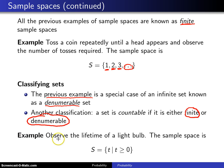Finally, one more example. Observe the lifetime of a light bulb. The sample space is S is the set of all T values such that T is greater than or equal to zero. And I included equal to zero in case you get the light bulb home from the store and you screw it into the socket and it doesn't work at all. In that case you'd have a failure time of zero.